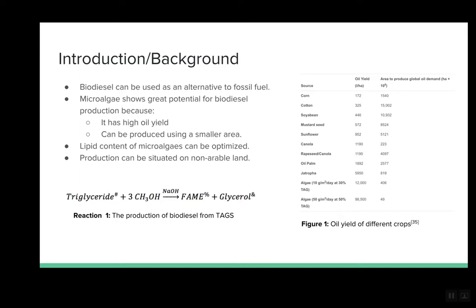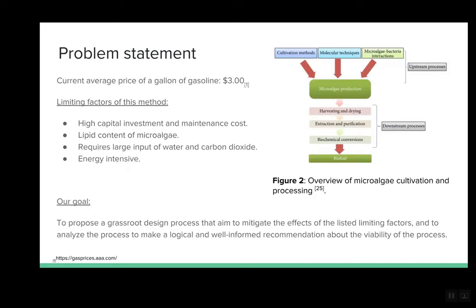As shown in figure one, microalgae exceeds the oil productivity of some of the best oil-producing crops. A number of researchers have postulated that microalgae have more potential to completely displace petroleum-derived fuels because their production can be situated on non-arable land.